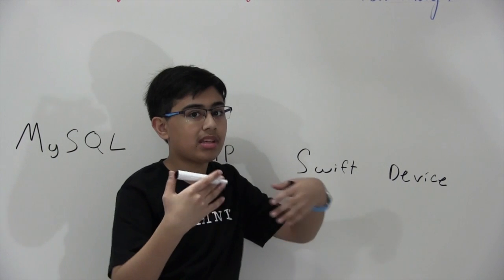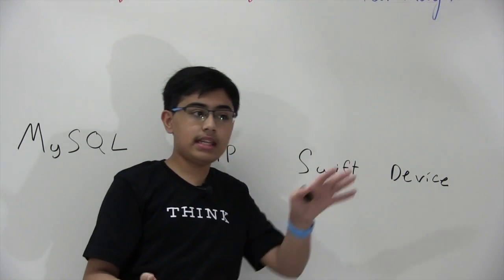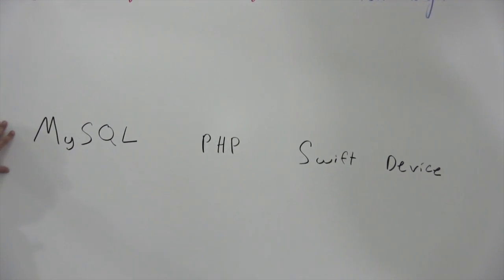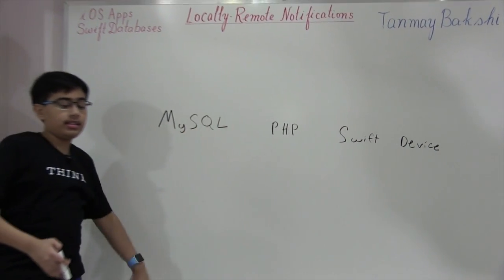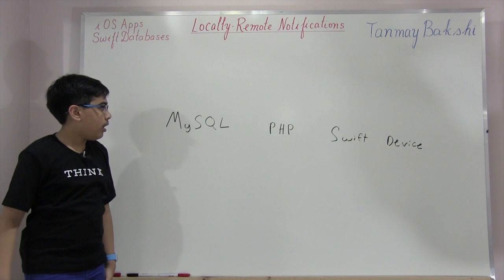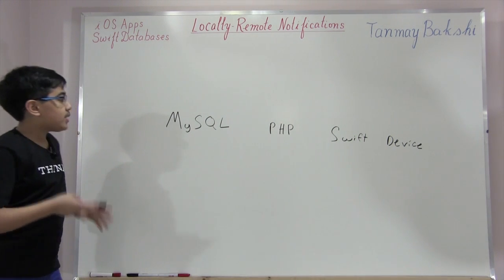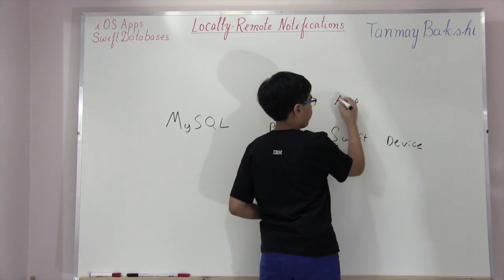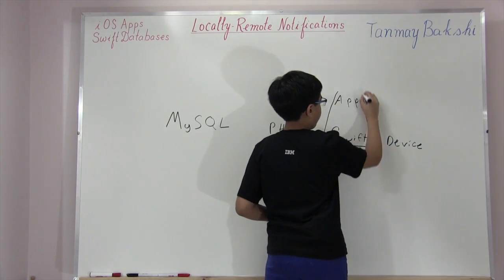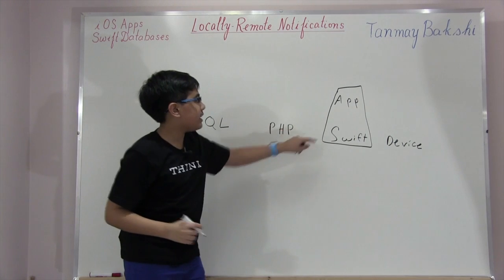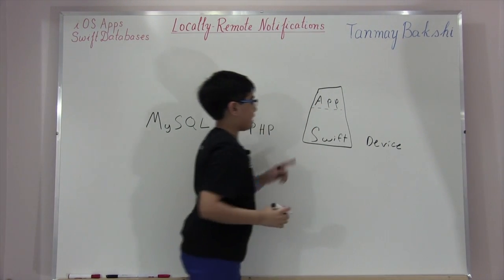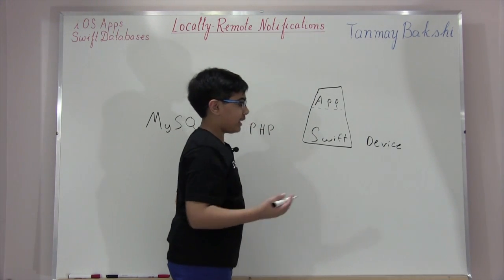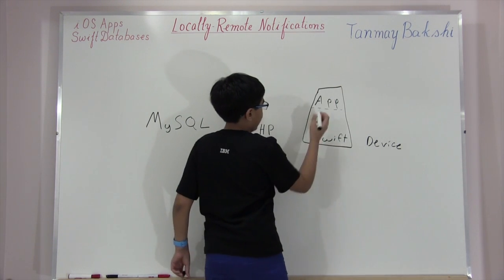Technically Swift runs under the device, but there is also a UIDevice class in Swift that you can use to do things like local notifications. Now, how do we use all of these objects and local notifications to simulate remote notifications? The app is sort of like the container of Swift — there's basically an app and it contains Swift. The device technically contains the app.